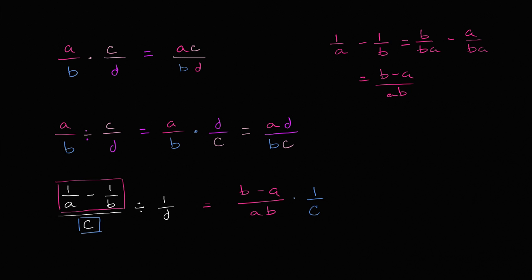And if I am, and I'll just keep going here, if I'm dividing by one over d, notice this is the same thing as division right over here. If I'm dividing by c, that's the same thing as multiplying by the reciprocal of c. And then finally, I'm dividing by one over d, that's the same thing as multiplying by the reciprocal of one over d. So the reciprocal of one over d is d over one.